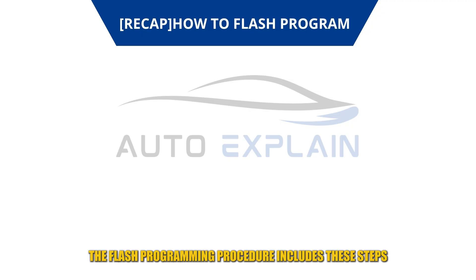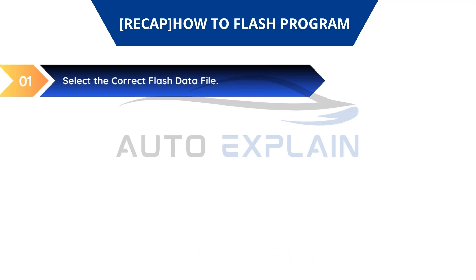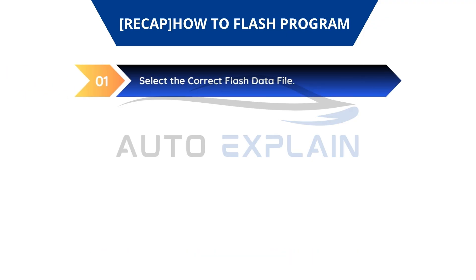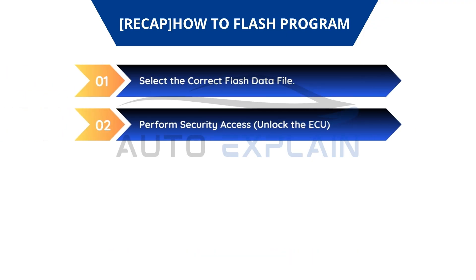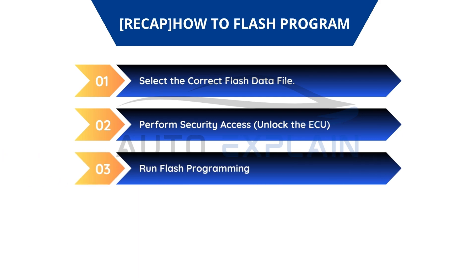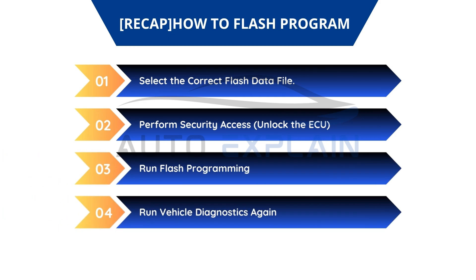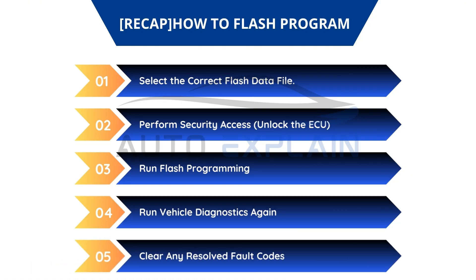To summarize, the flash programming procedure includes these steps: select the correct flash data file; perform security access in the Diagnostic Services tab; run flash programming; perform a hard reset; run vehicle diagnostics again; and clear any resolved fault codes. This ensures that the ECU is successfully updated and fully functional.